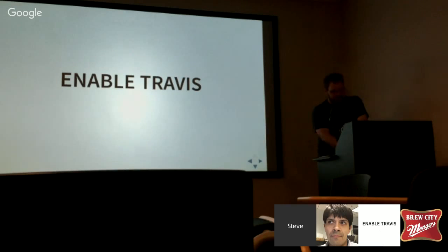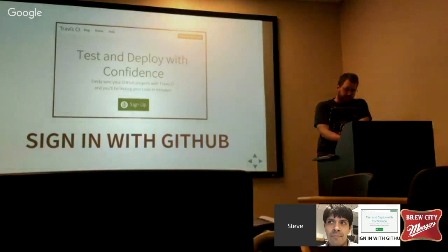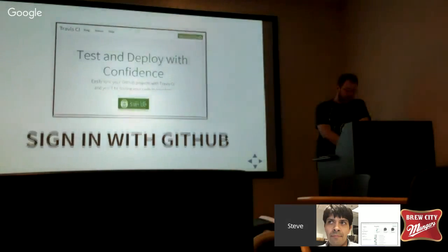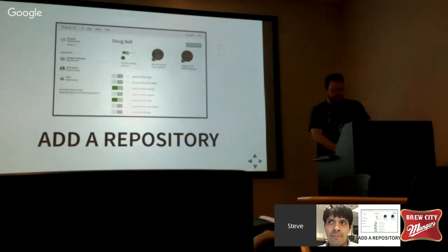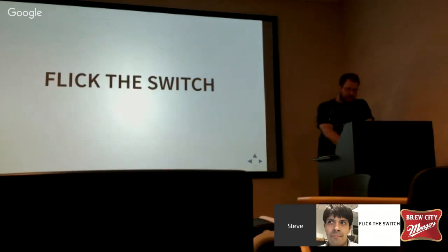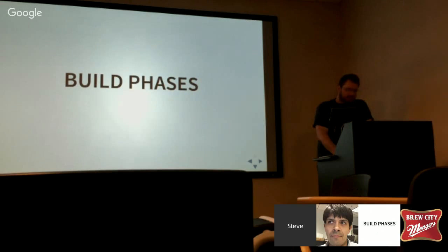To enable Travis, you have to go to travis-ci.org, sign in with GitHub, and it links your accounts. Then it brings you to a page which allows you to click the little switch next to your repository. All you've got to do is click the switch and you're done. Any questions about getting started?